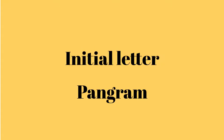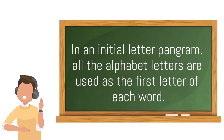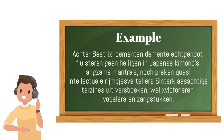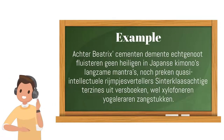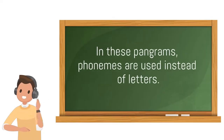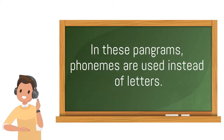Initial letter pangrams: in an initial letter pangram, all the alphabet letters are used as the first letter of each word. An English initial letter pangram must contain 26 words representing all 26 letters of the alphabet. Finally, phonetic pangrams: in these pangrams, phonemes are used instead of letters.